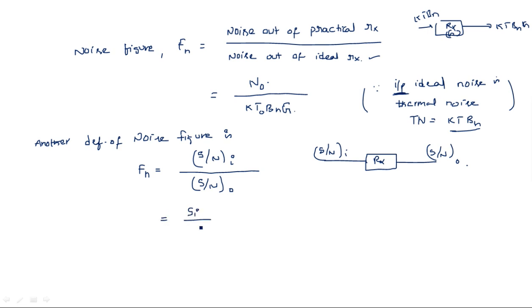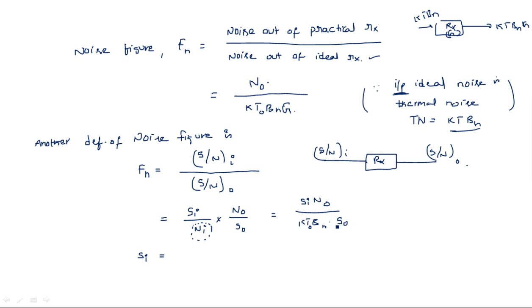We can separate Fn as (Si/Ni) × (N₀/S₀). Since the input noise Ni is KT₀BN, we can write Fn as Si·N₀ divided by KT₀BN·S₀. Rearranging, Si is equal to KT₀BN × Fn × (S₀/N₀).